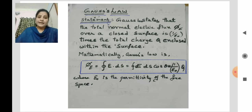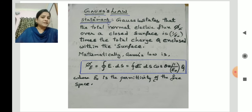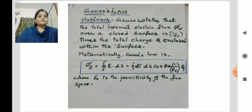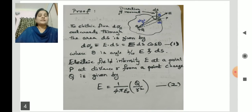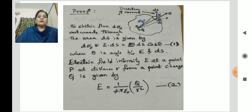Here epsilon naught is the permittivity of free space. Permittivity is the property of that medium which governs the electric lines of force in that field. Next, let us look into the proof of this Gauss law.